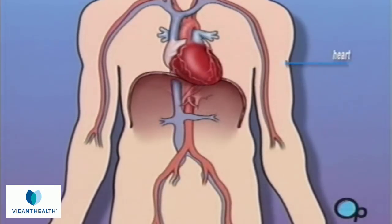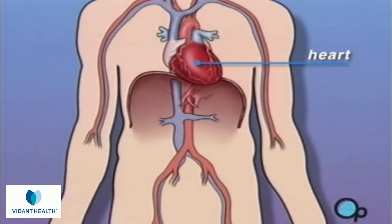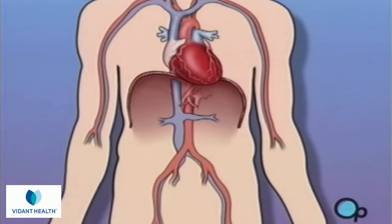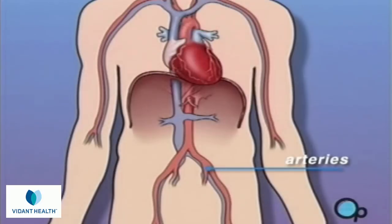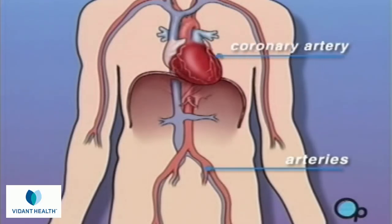The heart is located in the center of the chest. Its job is to keep blood continually circulating throughout the body. The blood vessels that supply the body with oxygen-rich blood are called arteries. The arteries that supply blood to the heart muscle itself are called coronary arteries.